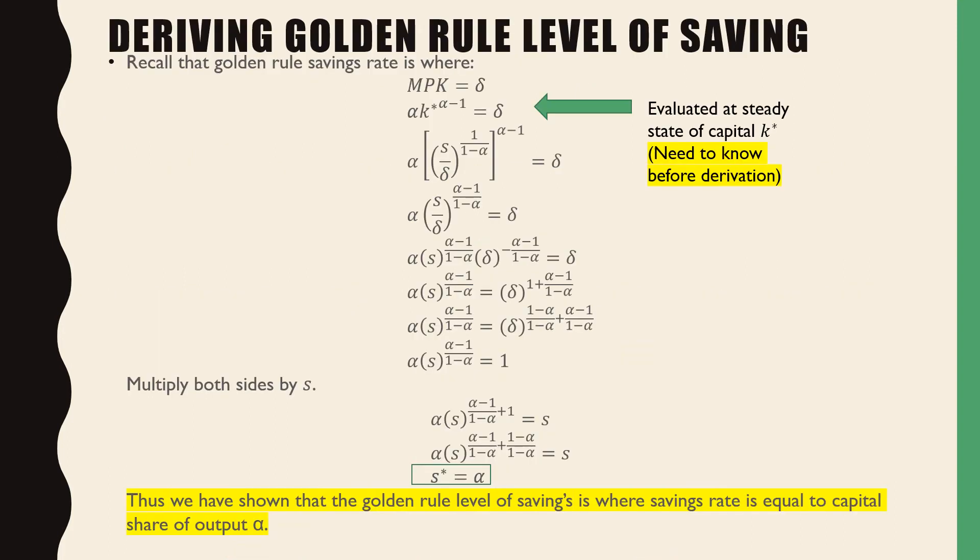In terms of showing that our golden rule level of savings is equal to alpha, we could see that there's a little bit of algebra involved. I'm just going to make a couple of points over here.